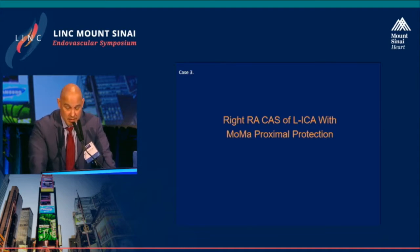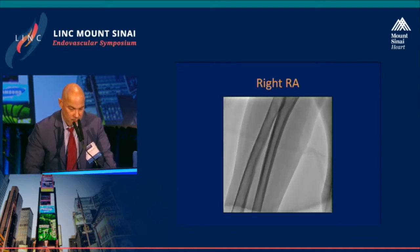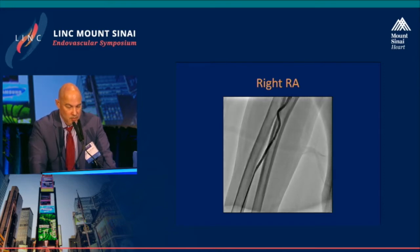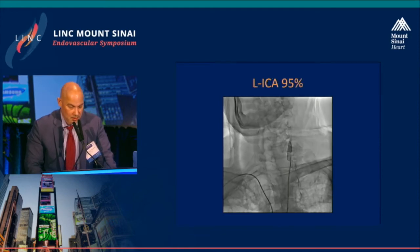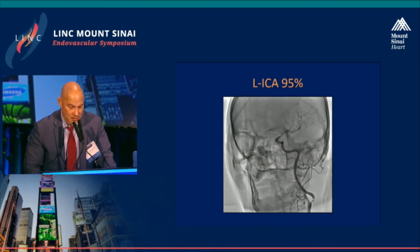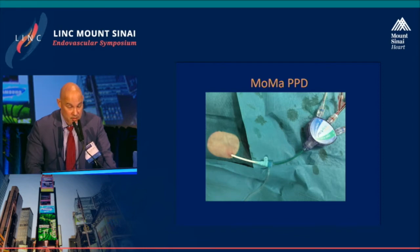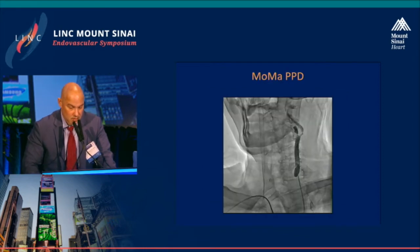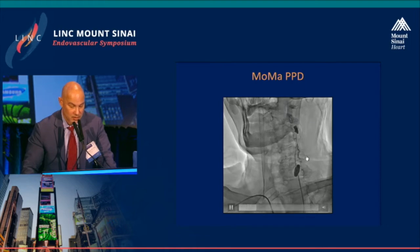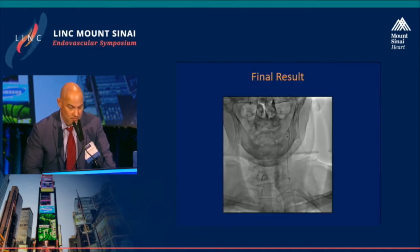The next case was borrowed from a colleague from Skopje: right radial carotid stenting of a left internal carotid utilizing a proximal protection device. This demonstrates a robust right radial artery. A Simmons 2 catheter is advanced to the left internal carotid artery, a wire is advanced to the left external carotid, and then a MoMA proximal protection device is advanced. With proximal balloon inflation and distal balloon inflation in the external carotid, there is no antegrade flow except what is injected through the catheter. This is the final result after debris retrieval.